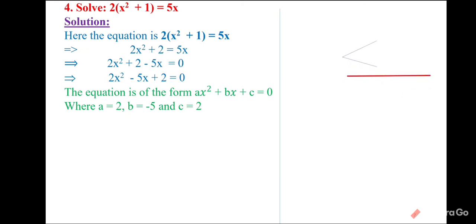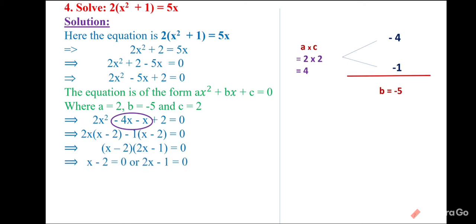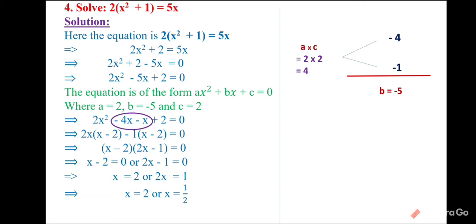Finding the factors: a × c = 2 × 2 = 4, and b = −5. We need two numbers with product 4 and sum −5: −4 and −1 work, since (−4)(−1) = 4 and (−4) + (−1) = −5. Splitting: 2x² − 4x − x + 2 = 0. Grouping: 2x(x − 2) − 1(x − 2) = 0, so (x − 2)(2x − 1) = 0. Solutions: x = 2 and x = 1/2.